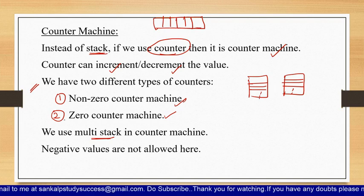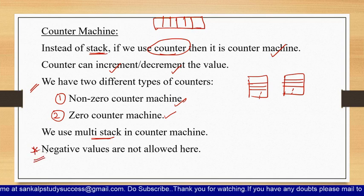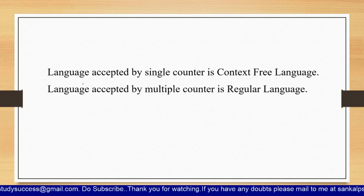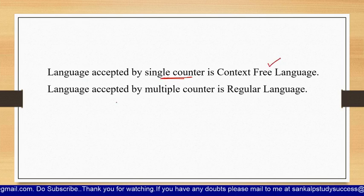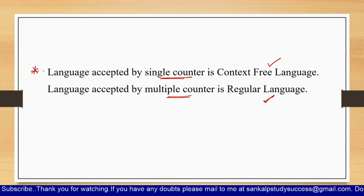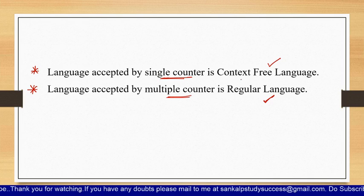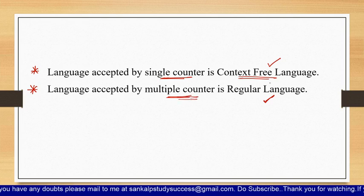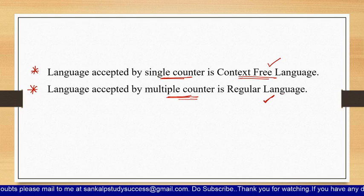Two important points about counter machines: any language accepted by a single counter is a context-free language, and any language accepted by multiple counters is a regular language. These are the two most important points to remember about counter machines.